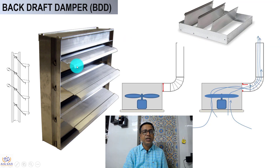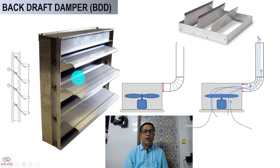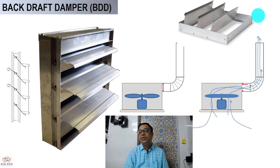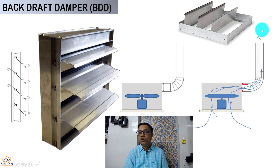Let us look further. This is a BDD — you can see it will close if the air comes from the wrong direction, and open to allow correct air flow. In this exhaust duct example: when the fan is on, the flap goes up and air flows out. When the fan is switched off, the flap closes and does not allow air to come back from outside. The air flows from inside to outside — that is the whole purpose of the BDD.